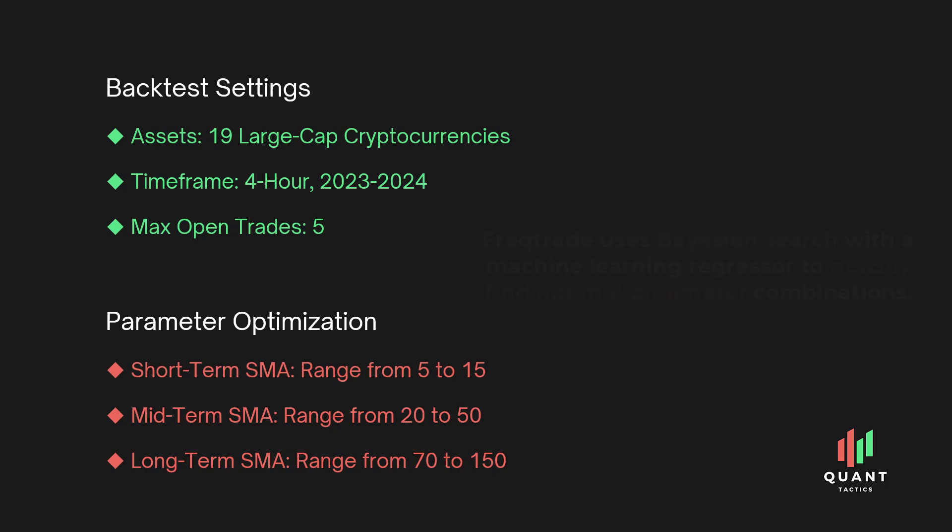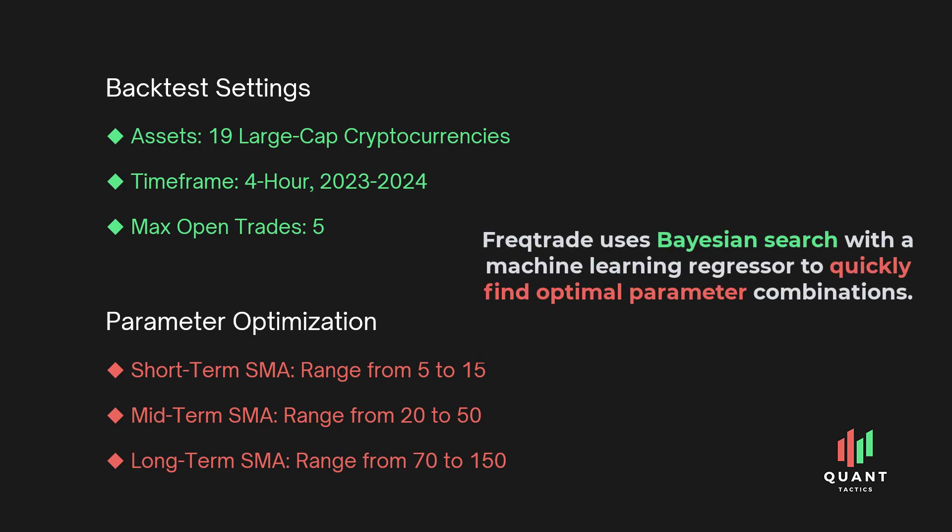To find the best settings, we will use hyperparameter optimization with a Bayesian search method, along with a machine learning regressor algorithm. This approach will help us efficiently find the combination of parameters that gives the best Sharpe ratio, which measures risk-adjusted returns.